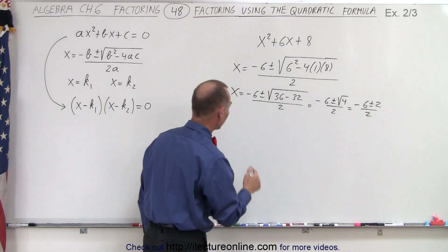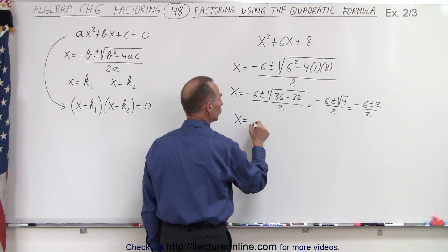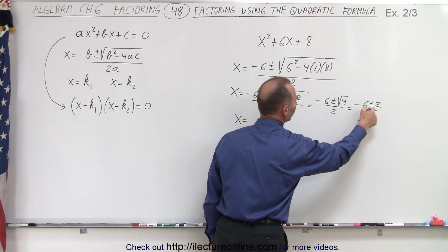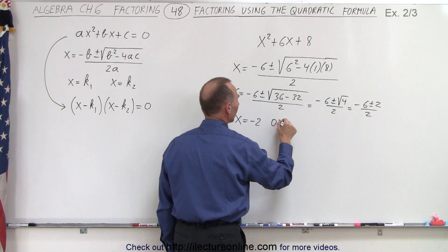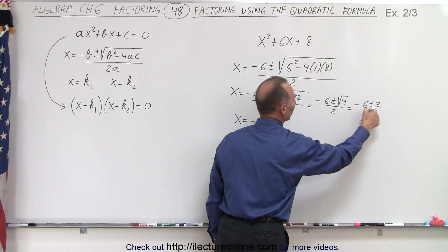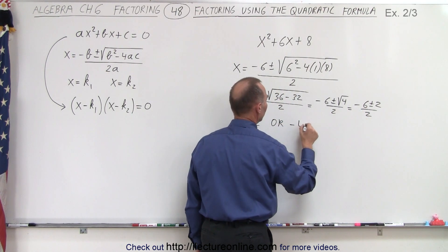Which means we get two possible values. That means x is equal to minus 6 plus 2, that's minus 4, divided by 2, which is minus 2, or minus 6 minus 2 is minus 8, divided by 2, minus 4.